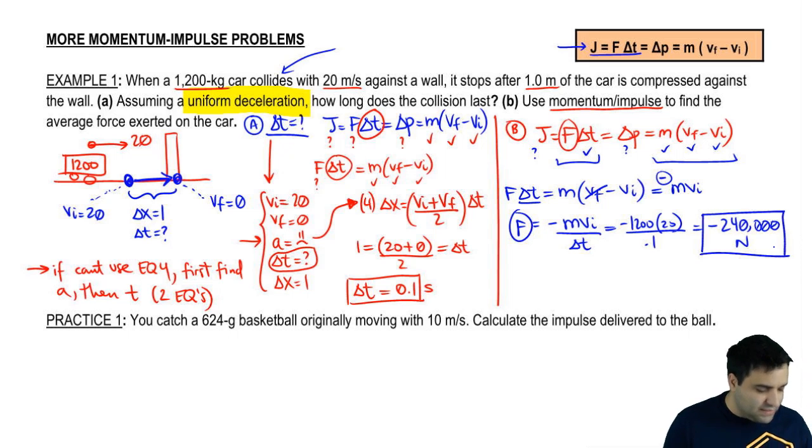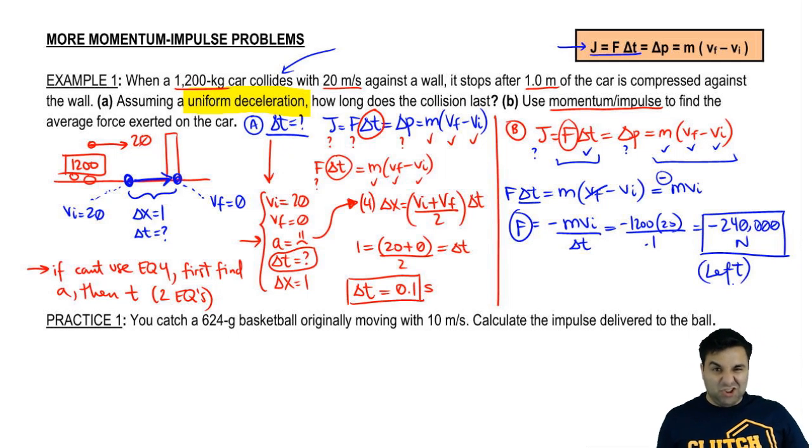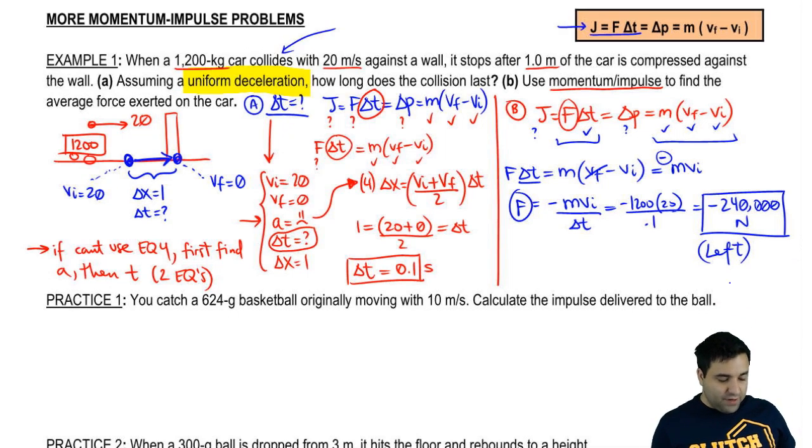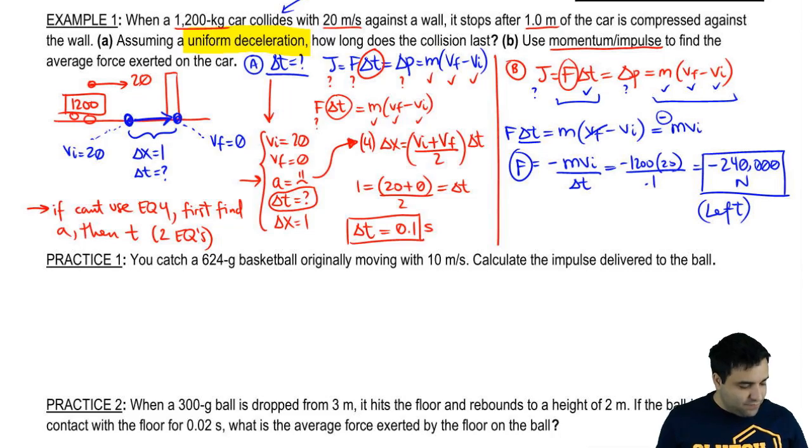So the answer is negative 240,000 newtons. It's negative because it's a stopping force. The force is to the left. And the reason why you have such a big number is because you're stopping a heavy car that's moving really fast in just a meter. Think about a collision, how much that hurts. That's why you get a big F there. So that should make sense. That's the final answer.